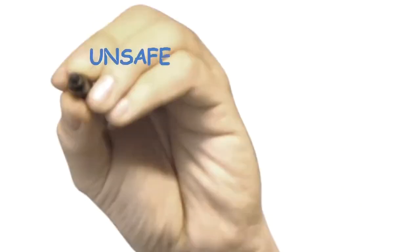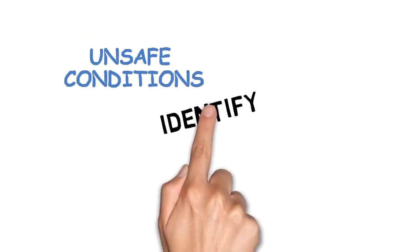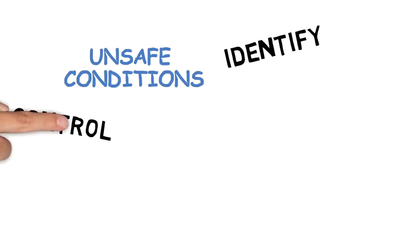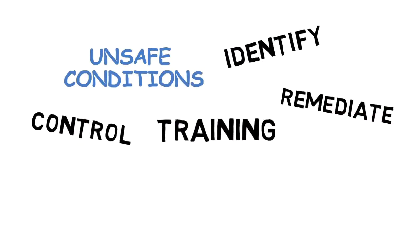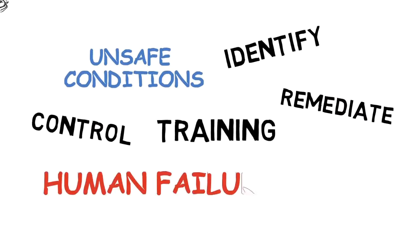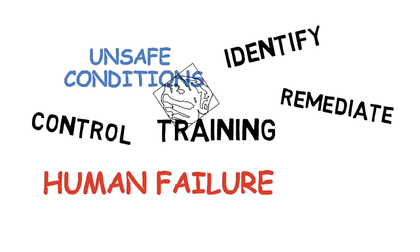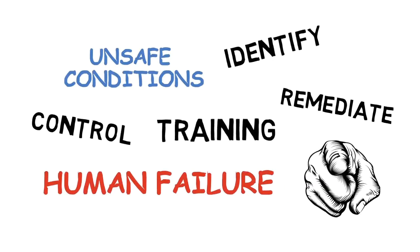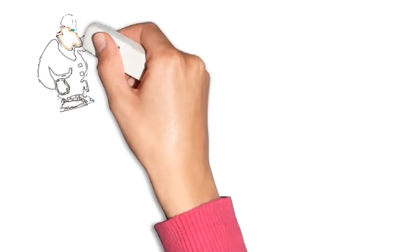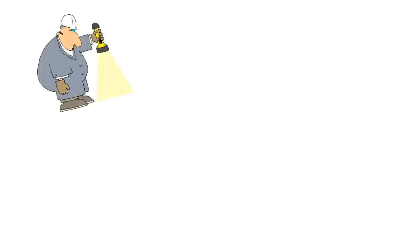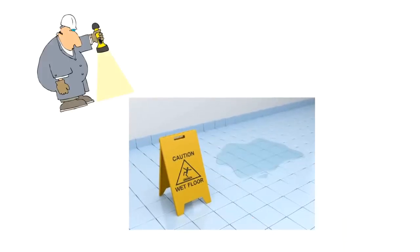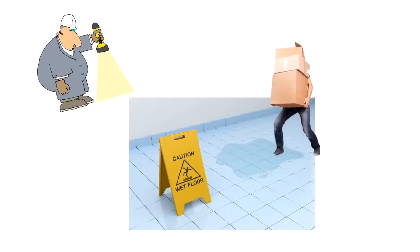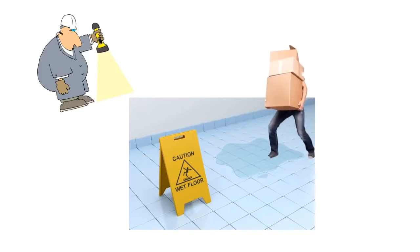Unsafe conditions occur when there is a failure to identify, control, remediate, or train properly against a hazard. Even though there can be multiple human causes, accident investigations will always identify the human failure to correct the hazard. Some unsafe conditions are easy to spot; finding others needs a closer inspection. For example, liquid on a walking surface is an unsafe condition, but you won't see it if you aren't looking where you are stepping.